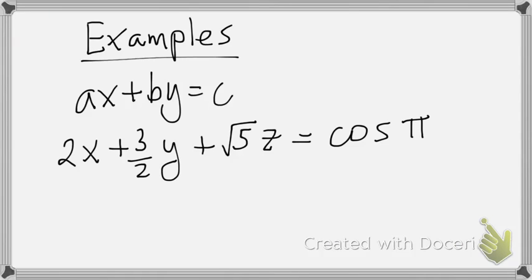Here are some examples of linear equations. ax plus by equals c or any coefficient that is a real number is in this form. 2x plus 3 halves y plus the square root of 5z is equal to cosine of pi.